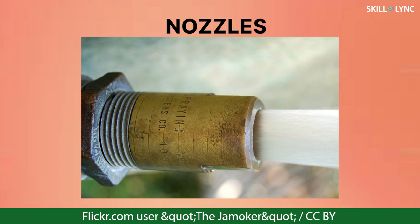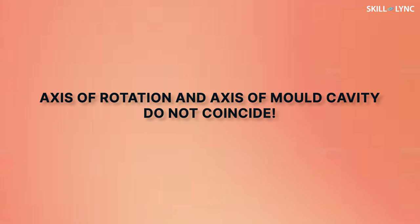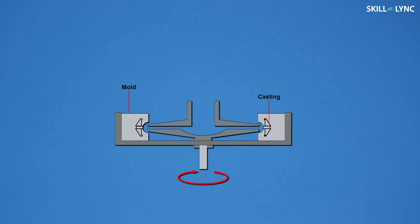Now, let's move on to our final topic for today, which is centrifuging. Unlike in the previous two types, the axis of rotation in the centrifuging process do not coincide with the axis of the mold cavity. In this process, the mold is placed at a certain distance from the rotational axis.